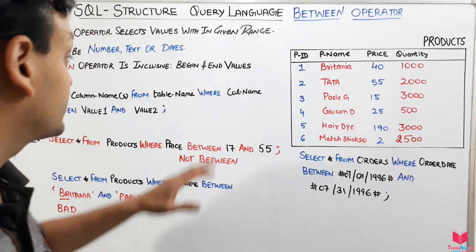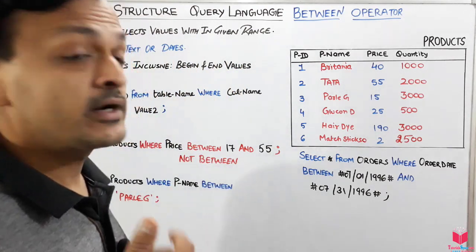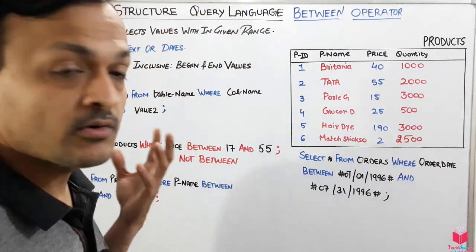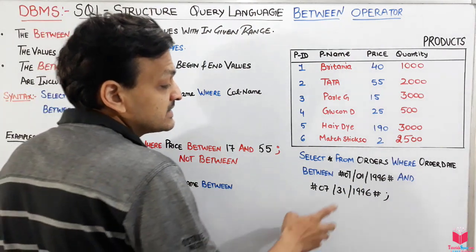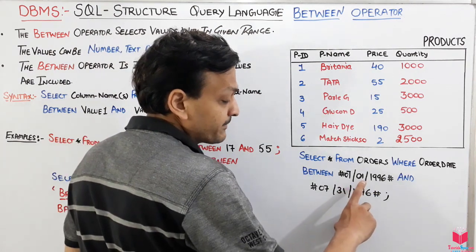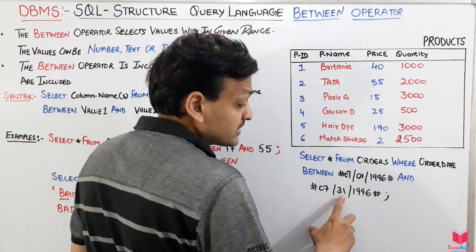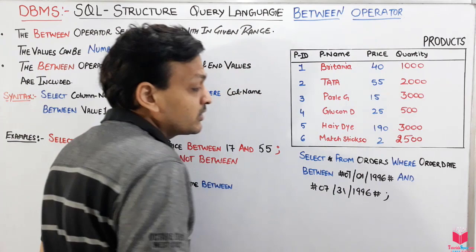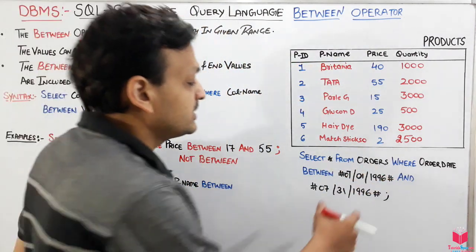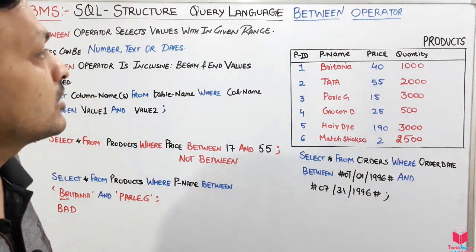For a date-based example: SELECT * FROM orders WHERE order_date BETWEEN '07/01/1996' AND '07/31/1996'. This will give all details from the orders table from 1st July 1996 to 31st July 1996, and both those dates will also be included.